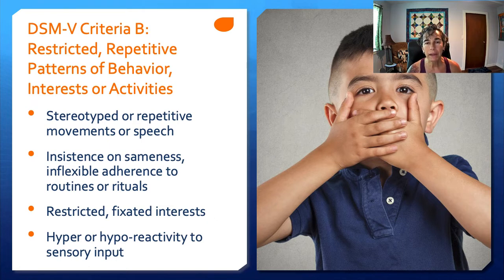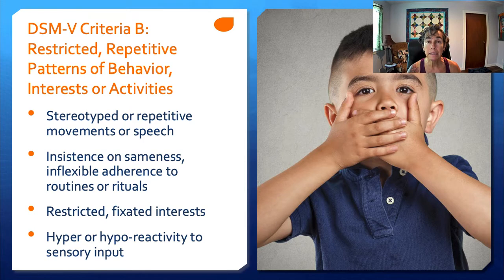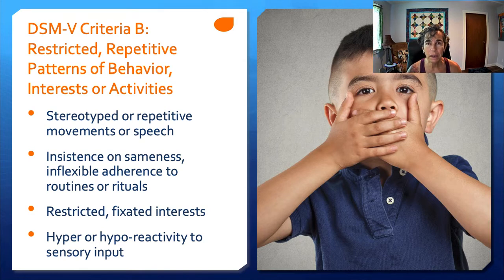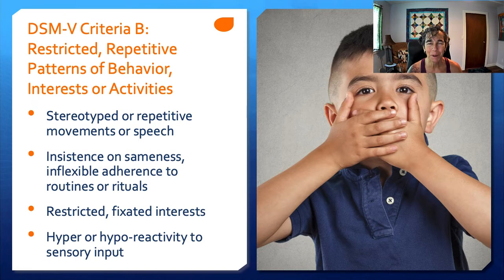Criteria B: restricted, repetitive patterns of behaviors, interests, or activities. This could be stereotyped movements or speech like tic-like behavior, or echolalia — repeating what someone else has said. It can be an insistence on sameness, inflexibility or rigidity around routines, rituals, or habits. There can also be restricted or fixated interests. I've had kids fixated on stereo systems, cars and their logos, ancient Egypt — a range of things. I've become something of an expert on a range of topics of interest to a variety of people.